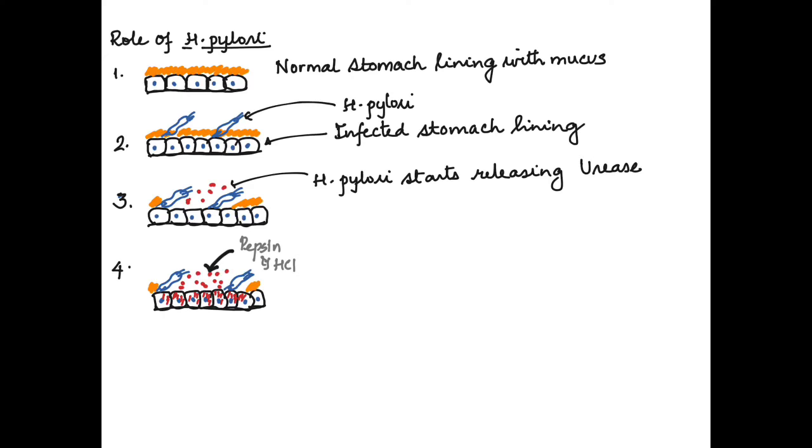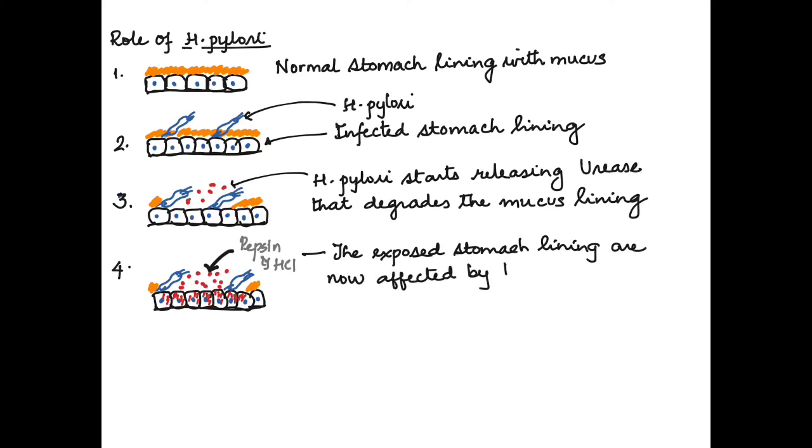Releasing urease leads to degradation of the mucus lining that is there above the cells in the stomach. When the mucus lining is degraded or mucus lining is lost, then pepsin and HCl both act on the cells because the cells are now exposed. So these can act on the cells and when they act on the cells they lead to infections or damage of the lining of the cells.